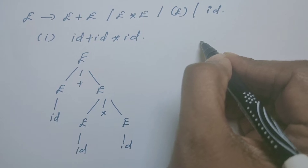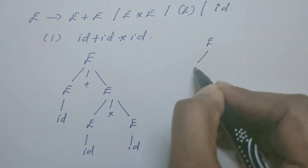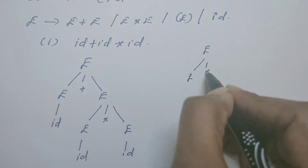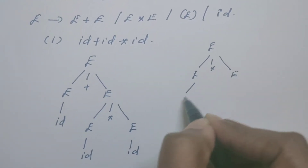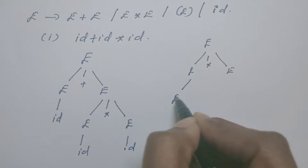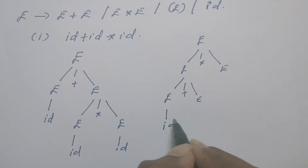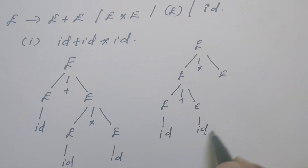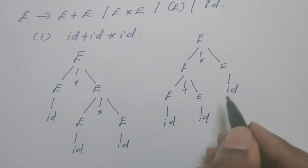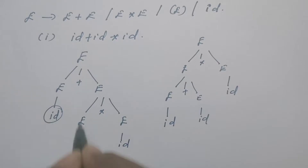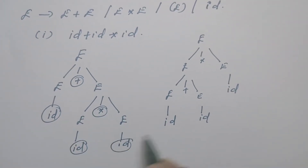Similarly, I can draw another parse tree. From the start symbol E, it can be replaced by the rule E star E. Now this E has to be replaced by E plus E. Every E can be replaced by ID. So there are two parse trees which are deriving the same string ID plus ID star ID.